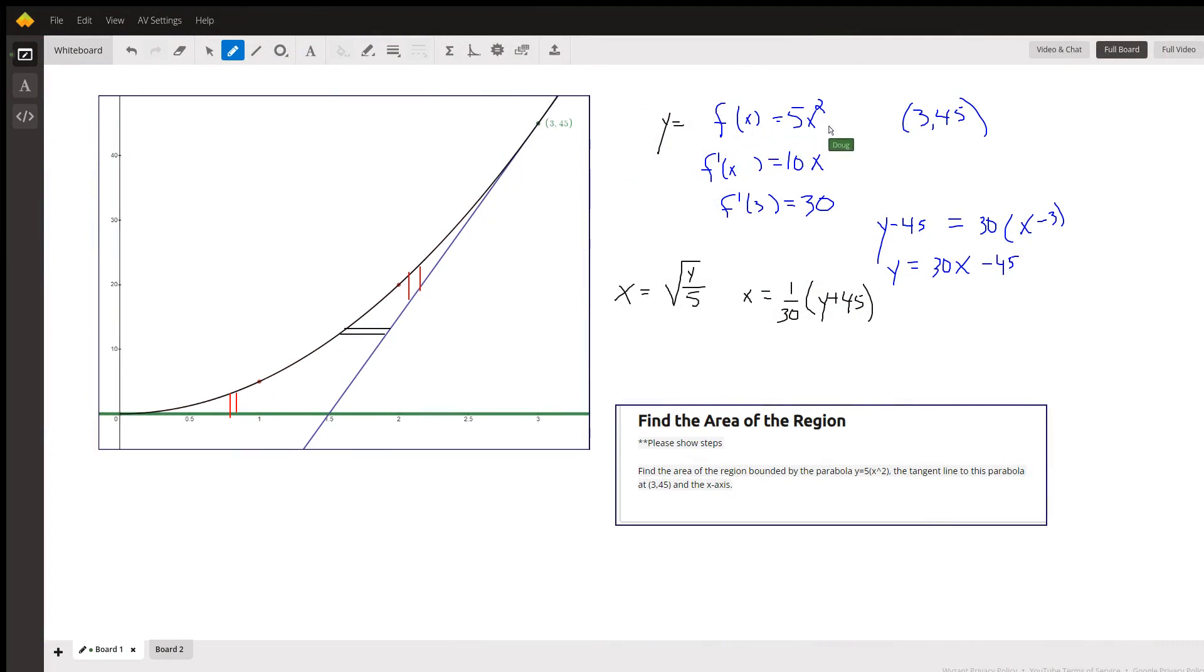Okay, you're given the parabola y equals 5x squared and asked to find the area of the region bounded by that parabola, which is this black curve right here, the tangent line at the point (3,45), which is this blue line, and the x-axis, which is right here, y equals 0.